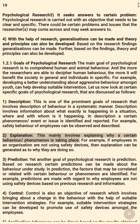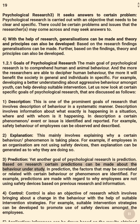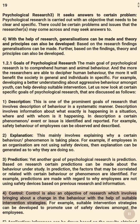Goal 2 is Explanation — this mainly involves explaining why a certain behavior or phenomenon is taking place. For example, if employees in an organization are not using safety devices, an explanation can be generated as to why they are doing so. Goal 3 is Prediction — based on research, certain predictions can be made about the behavior under study. The factors that may be correlated or related with certain behavior or phenomenon are identified. For example, predictions are made with regard to why employees are not using safety devices based on previous research and information. Goal 4 is Control — this involves bringing about a change in behavior with the help of suitable intervention strategies. For example, suitable intervention strategies can be developed to promote use of safety devices amongst employees.